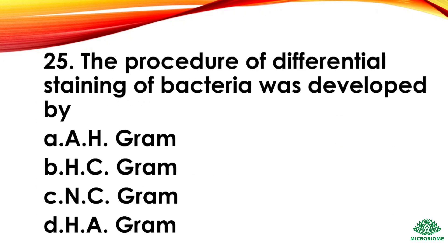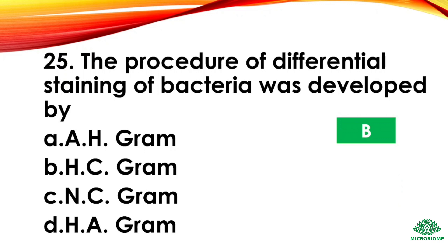Question 25: The procedure for differential staining of bacteria was developed by — options: AH Gram, HC Gram, NC Gram, HA Gram. The right answer: option B, HC Gram — Hans Christian Gram.